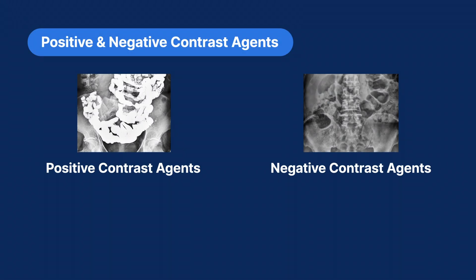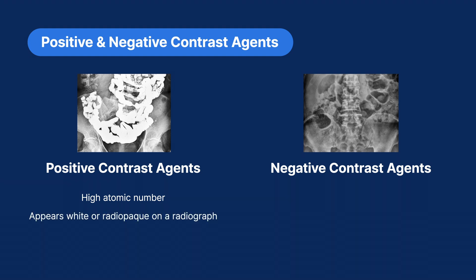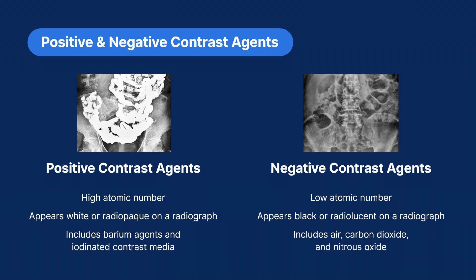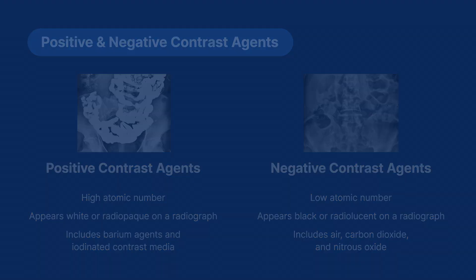Let's discuss the differences between positive and negative contrast agents. Positive contrast agents are comprised of high atomic number elements, which causes them to appear white or radiopaque on a radiograph. They include barium agents and iodinated contrast media. Negative contrast agents are comprised of low atomic number elements. They appear black or radiolucent on a radiograph, and they include air, carbon dioxide, and nitrous oxide.